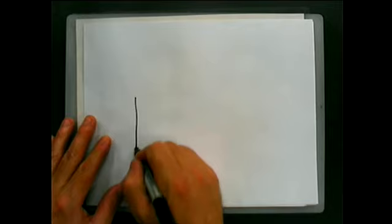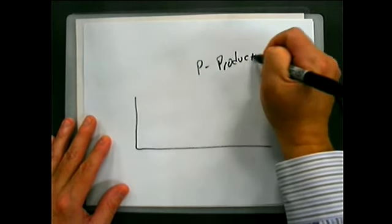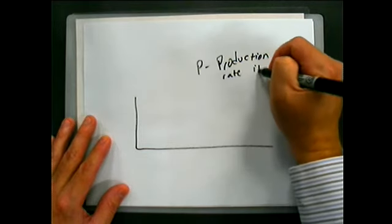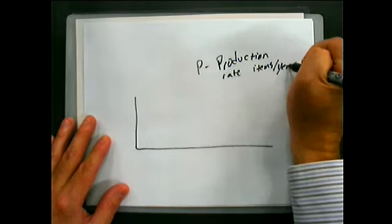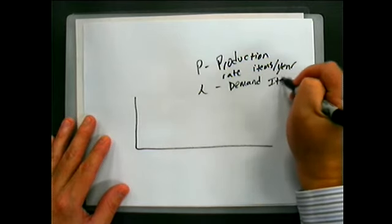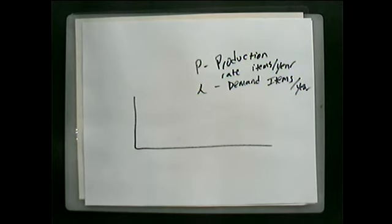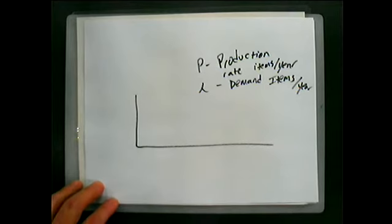We have a production rate P and a demand rate lambda. P is production rate, typically items per year, and lambda demand items per year. Now what has to be true for this problem to work out nicely? Which one's bigger, the production rate or the demand? The production rate. If the demand's greater than the production rate, what's your inventory position going to go to? Below, it'll go to negative infinity, right? Because you'll never be able to make the demand. And that's one of the assumptions.